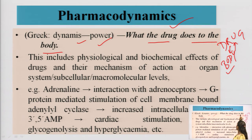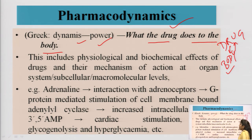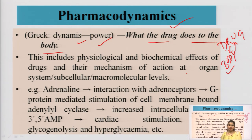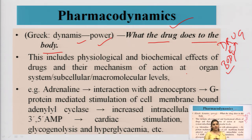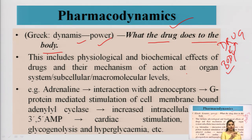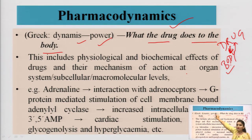Pharmacodynamics includes the physiological and biochemical effects of drugs and their mechanisms of action at the organ, system, subcellular, and macromolecular levels. It means: if you took a medicine, how did that medicine show its effect inside your body — did it bind to a receptor, an ion channel, did it activate an enzyme or a protein? This first correlation, between drug and body, comes under pharmacodynamics.